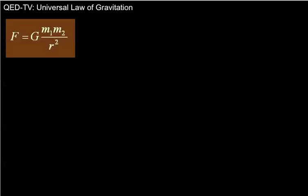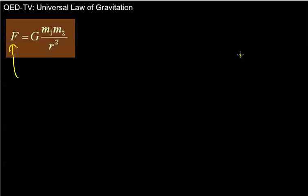In this video we want to look at Newton's Universal Law of Gravitation, probably one of the most important equations that we have in physics. This equation relates the force between any two bodies, any two objects. This is sometimes confusing to people because a lot of times people think that the only thing that provides gravitational force are really big objects like the Earth.